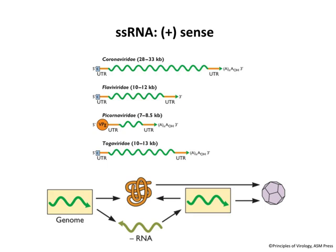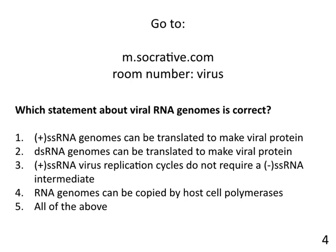A Socrative question: the correct answer is that single-stranded plus-stranded RNA genomes can be translated to make protein. Let's review the others: double-stranded DNA genomes cannot be directly translated — they must have mRNA made from them because the ribosome can't access a double strand. Plus-strand single-stranded RNA virus replication cycles do require a minus single-strand intermediate for genome replication. RNA genomes cannot be copied by host cell polymerases — there is no cellular RNA-dependent RNA polymerase. And none of the above is incorrect.